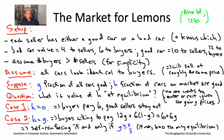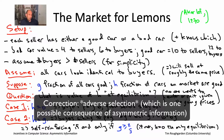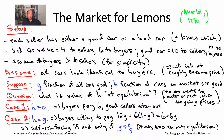There's a name for this type of market failure: it's called asymmetric information. Now let's move on to the next slide where we talk about several more examples of how adverse selection comes up in the real world.